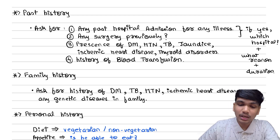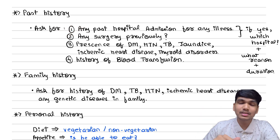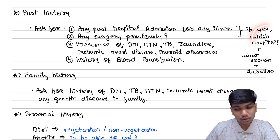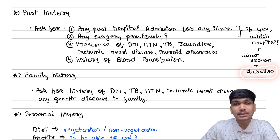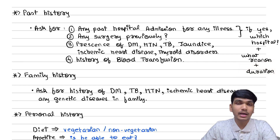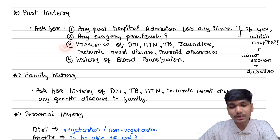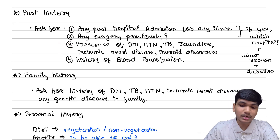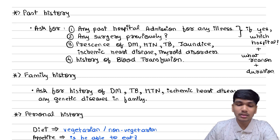Next is past history. In past history, you shall ask for any past hospital admission and any illness — not just this disease but any illness — and if yes, which hospital, what was the illness, and for how long. Next, was there any surgery and does it have any relevance to our disease. Next, ask for presence of diabetes, hypertension, tuberculosis, jaundice, ischemic heart disease, thyroid disorders, and history of blood transfusion. These are certain complaints which you have to ask compulsorily.